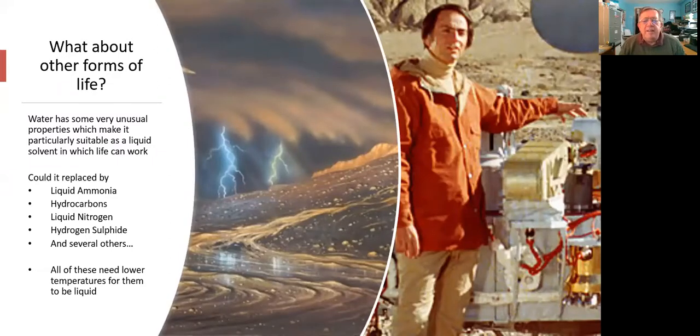They tend to need to live in a liquid because a liquid environment allows the food to arrive and the waste products to be washed away. So he thought about what other liquids might work. He thought maybe water could be replaced in an alien chemistry by liquid ammonia or hydrocarbons or liquid nitrogen or hydrogen sulfide or several others, including hydrogen cyanide.